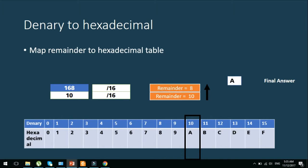And then the second remainder was 8. When you map 8 to the equivalent hexadecimal, you're going to get 8. So the final answer is A8, which is 168 as a denary number. To hexadecimal, it is A8.